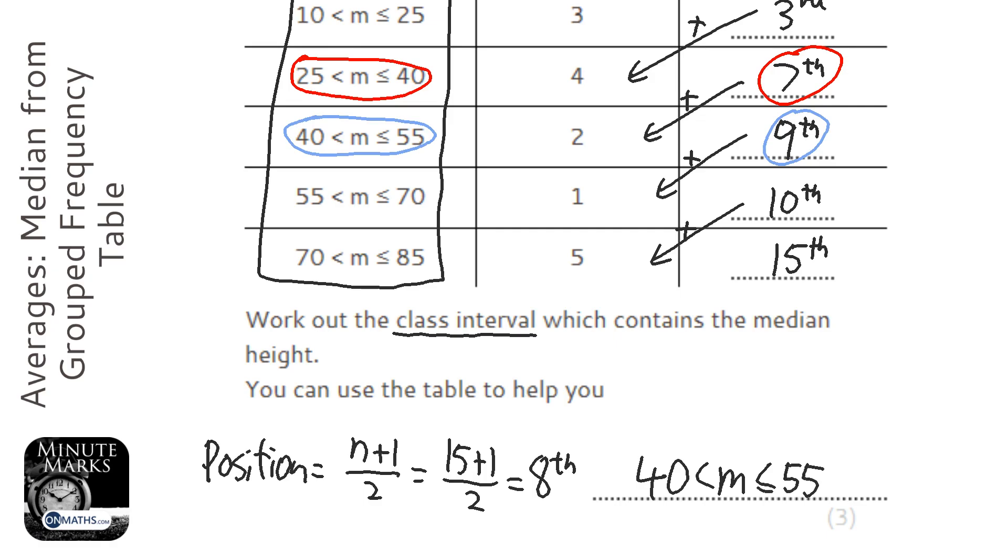And if you're asked for the class interval, make sure you copy it down exactly as it shows you on the table. It's tempting sometimes to write this, for example. Don't bother with that. Sometimes you'll lose the marks. So just copy it down straight from the table.